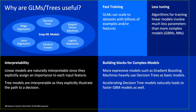GLMs are still heavily used, especially in financial services, primarily for model explainability. When using complex models like XGBoost, explaining decisions becomes harder. For example, if a bank rejects a loan application, they cannot simply say 'the model said so' — they must provide an explainable reason. This is a major requirement for auditing and compliance purposes.